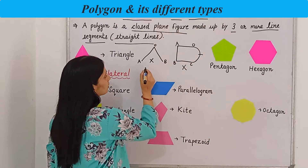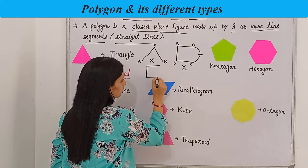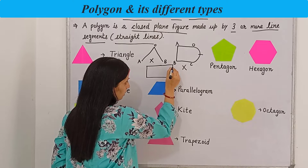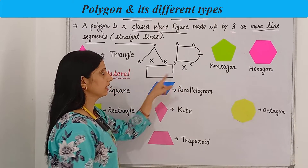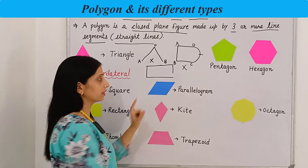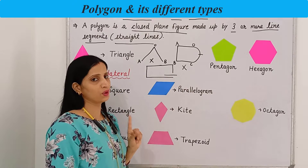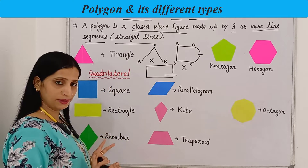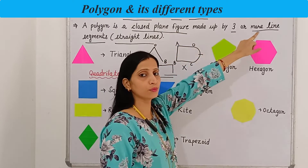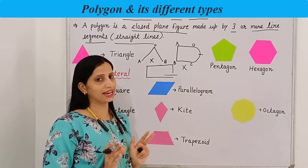The figure should also be closed. Let's draw another one — all these are line segments, all are straight, but the figure is an open figure, it is not a closed figure. Hence it will not be a polygon. So again the definition: a polygon is a closed plane figure made up by three or more line segments or straight lines. This means a minimum of three lines are required.